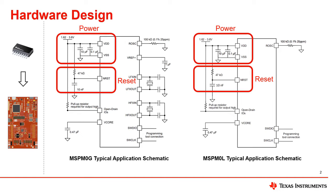Next is the reset pin, which requires a pull-up resistor of 47 kilo ohm and a capacitor of 10 nF to ensure reset signal stability. This capacitor value can be adjusted to meet your system specific requirements. A larger capacitor value will provide better interference immunity, but will increase the time for power on reset. If a system does not have a specific requirement for the MCU power on time, please consider increasing this capacitor value appropriately to improve the interference immunity of the reset pin.